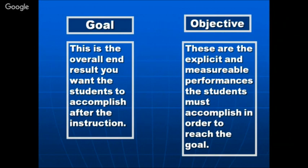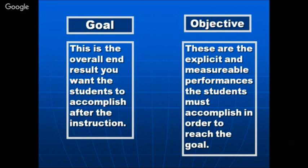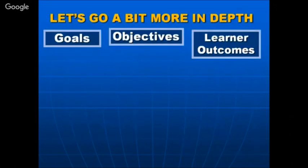For example, the end result — the goal — might be that the student should be able to design a beam or analyze the load on a building element. Objectives are the means to reach that goal: he is able to calculate, analyze structures, analyze loads, understand codes, and apply them to design a safe element. Objectives are written in explicit and measurable performance terms.